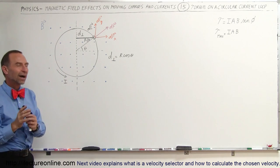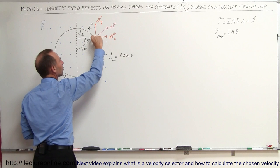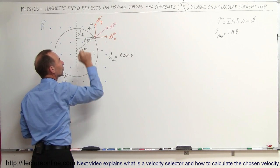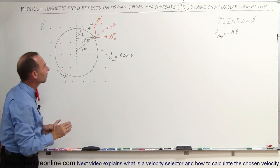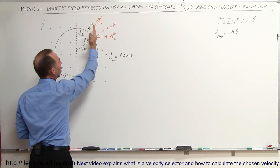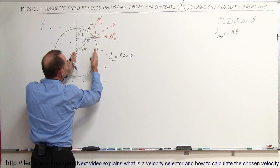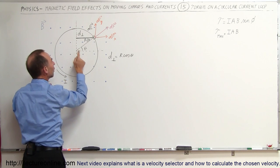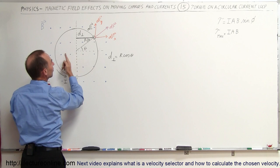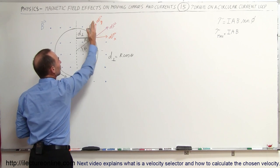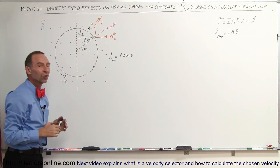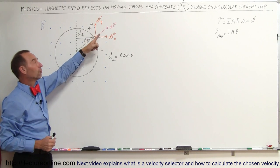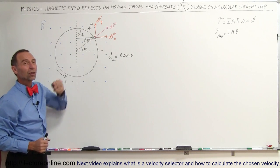Now, if we divide that force — the small little df caused by that small current segment — into the vertical and horizontal components, you then realize that the vertical components cannot cause a torque because they're in the same direction as the line going through the point where it rotates. Since this force never crosses this point, there's no way that we can cause a torque by this component of the force. Only the horizontal component of the force can cause a torque.